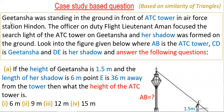Now let us move to the problem. Geetan Shah was standing in the ground in front of the ATC tower in Air Force Station, Hindun. The officer on duty, Flight Lieutenant Amman, focused the searchlight of the ATC tower on Geetan Shah and her shadow was formed on the ground. Look into the figure given below where AB is the ATC tower, CD is Geetan Shah, and DE is her shadow, and answer the following questions.